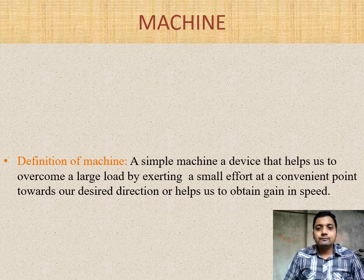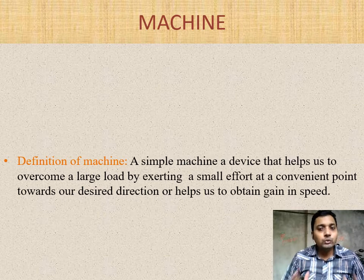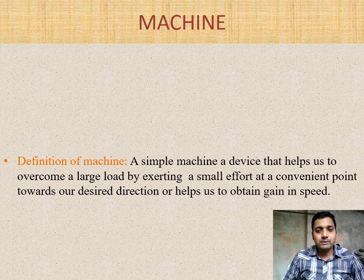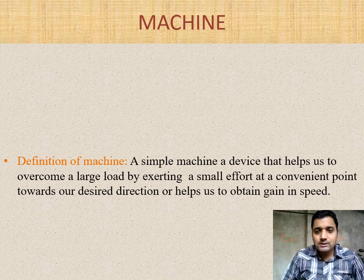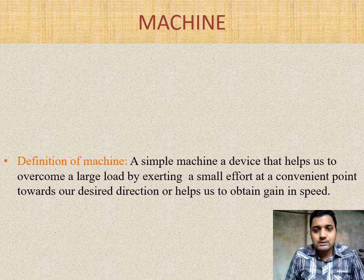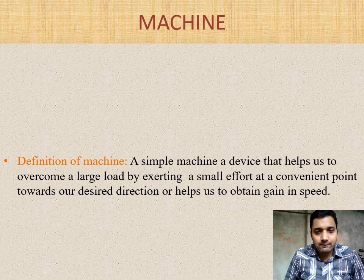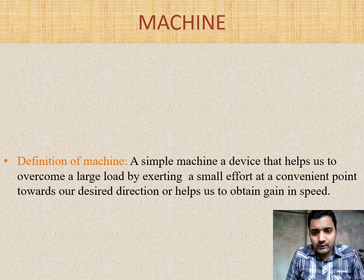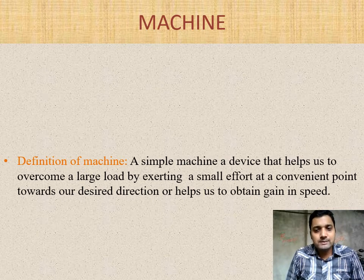Machines are of two types: simple machines and complex machines. Here we are going to discuss about simple machines. In the simple machine category, we have a knife, nail cutter, stapler, nut cutter — all the items you use in daily life are in the category of simple machines.